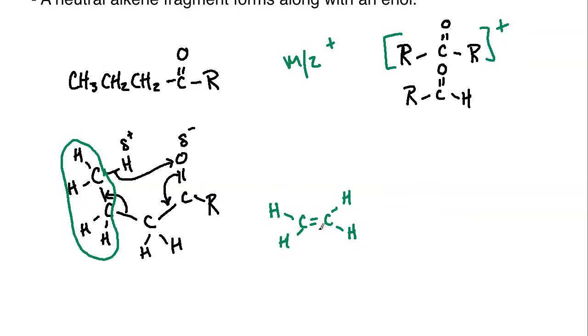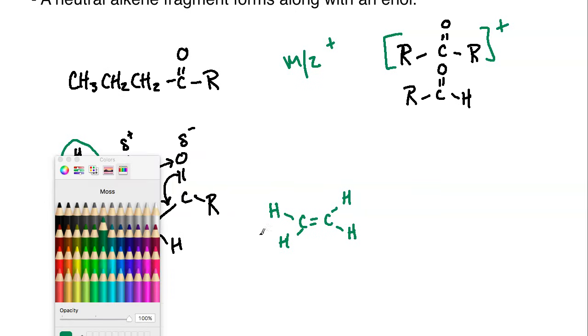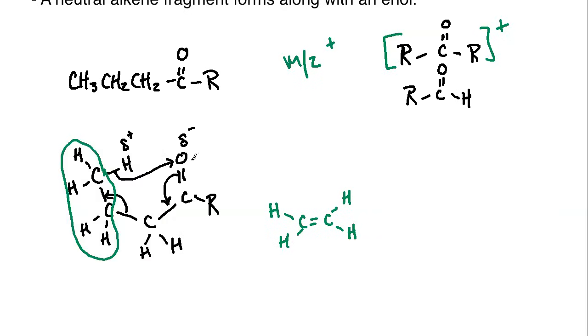So the alkene will be a neutral fragment that cleaves off, and then you're also going to have your enol. Let's highlight that portion in a different color here and we'll show that.